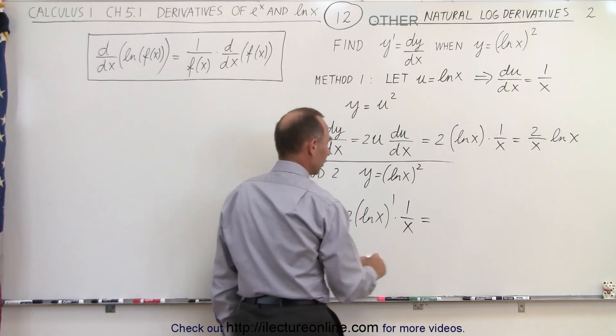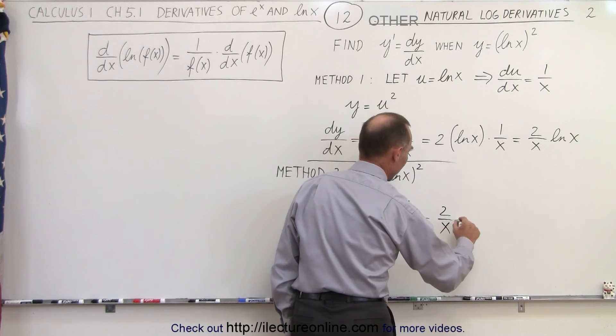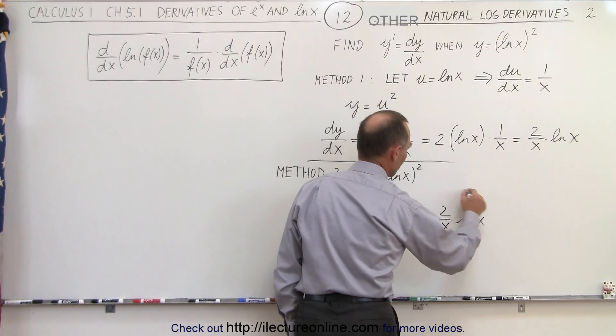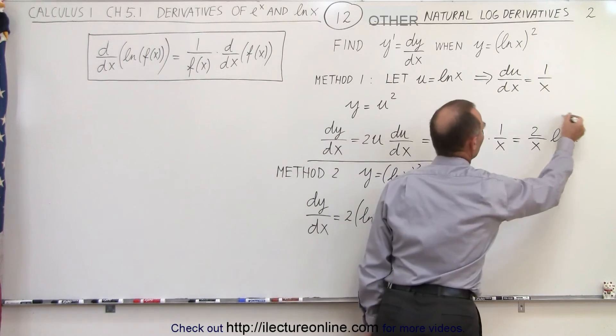And so when we simplify that, we end up with 2 over x times the natural log of x, which is the exact same as we got over here.